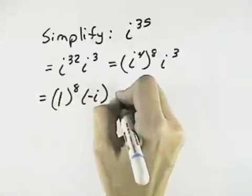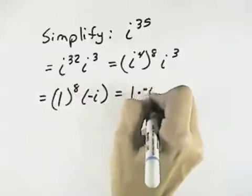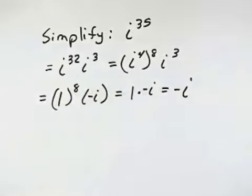Well, 1 to the 8th is just 1, so you have 1 times negative i, which is just negative i. So i to the 35th reduces to negative i.